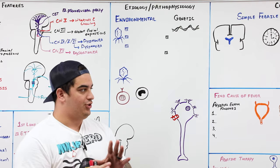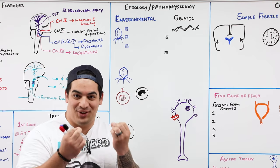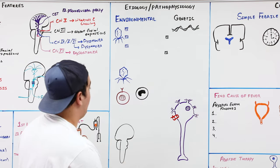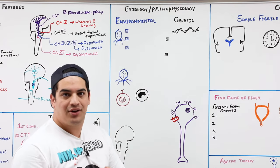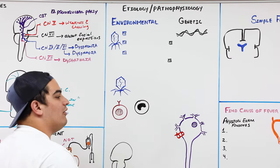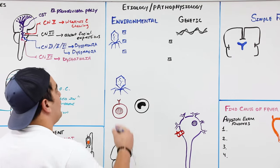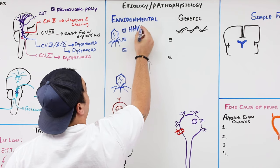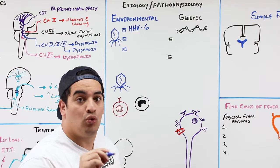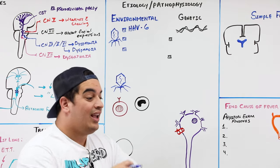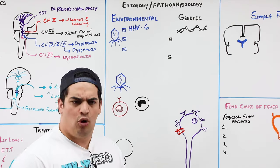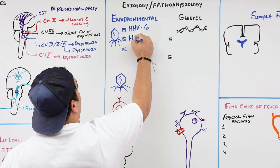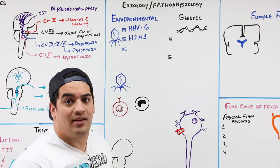When we talk about febrile seizures, it's obviously a fever that is the trigger, but what is causing that fever is the key question. It's primarily a viral infection. The first viral infection to think about is HHV-6 — human herpesvirus 6 — seen in roseola infantum, where patients have a fever, a viral exanthem, and febrile seizures as a potential complication. The other one is H1N1 influenza.